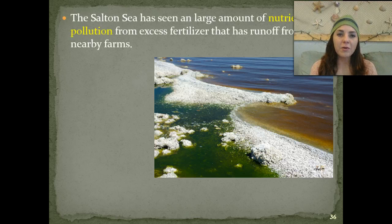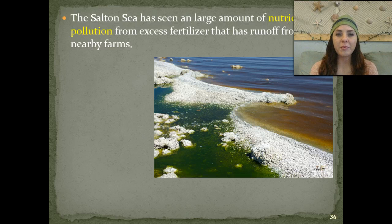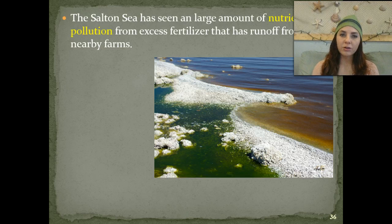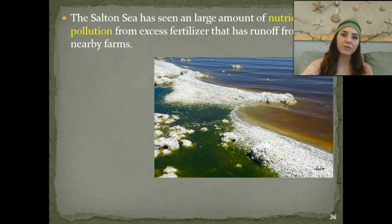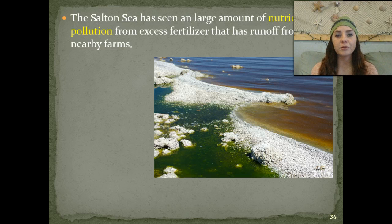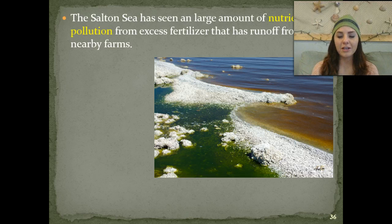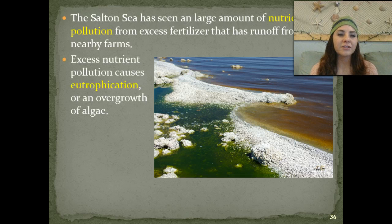Going back to our case study, the Salton Sea has seen a large amount of nutrient pollution from excess fertilizers that have run off from nearby farms. As those fertilizers run off from the farms, they get put into streams and rivers and eventually make their way to larger bodies of water such as the Salton Sea. The excess nutrient pollution causes eutrophication, or an overgrowth of algae.